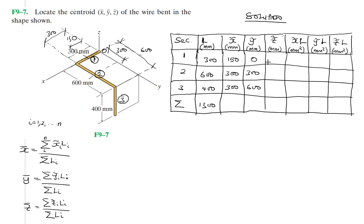Now for z̄: section one has a z-centroid of zero. Section two is on the x-y plane, so it is also zero. For section three, the z-centroid is half of 400 millimeters, which is negative 200 millimeters, since it runs in the negative z-axis direction.